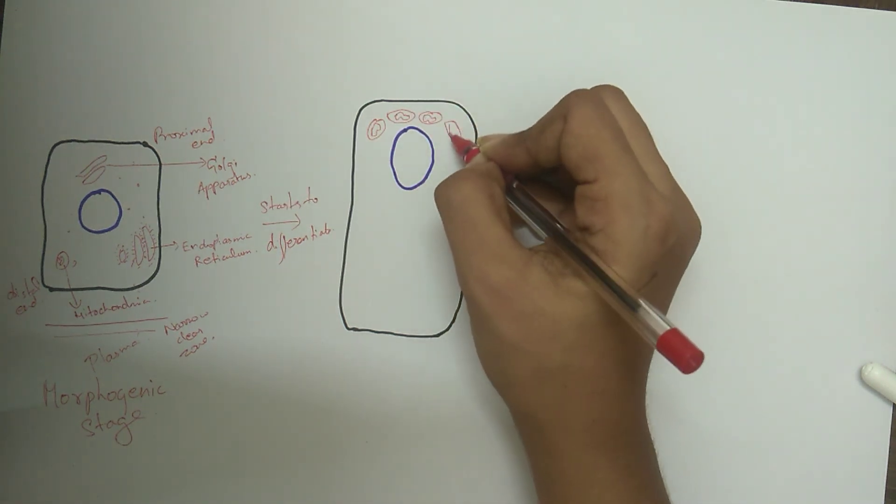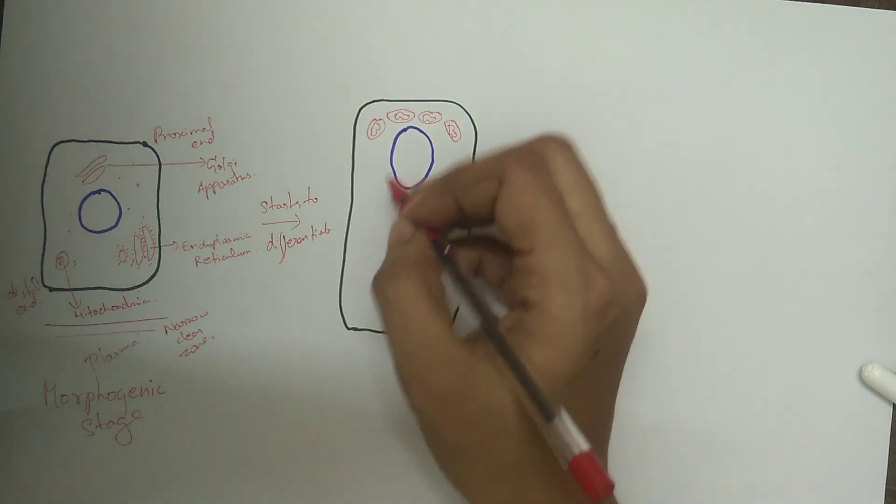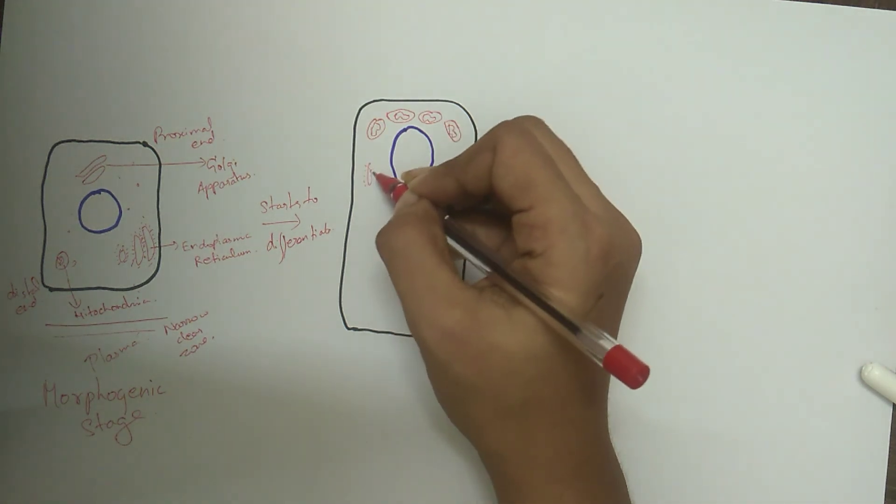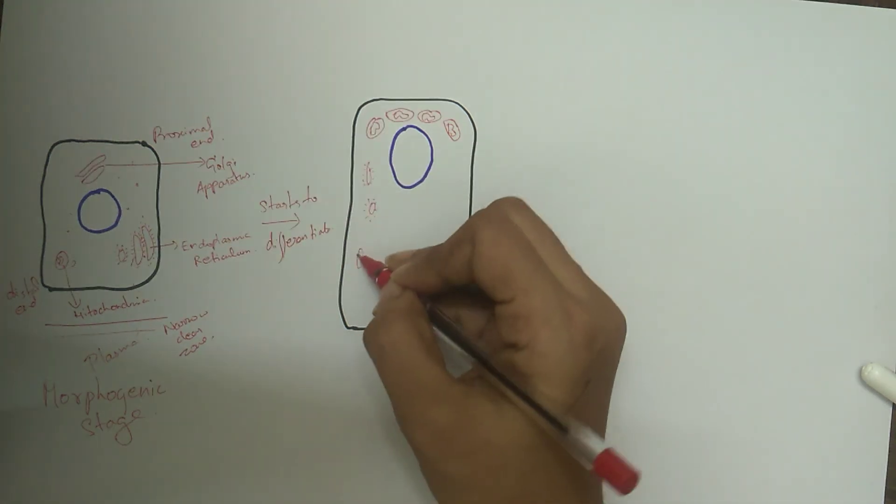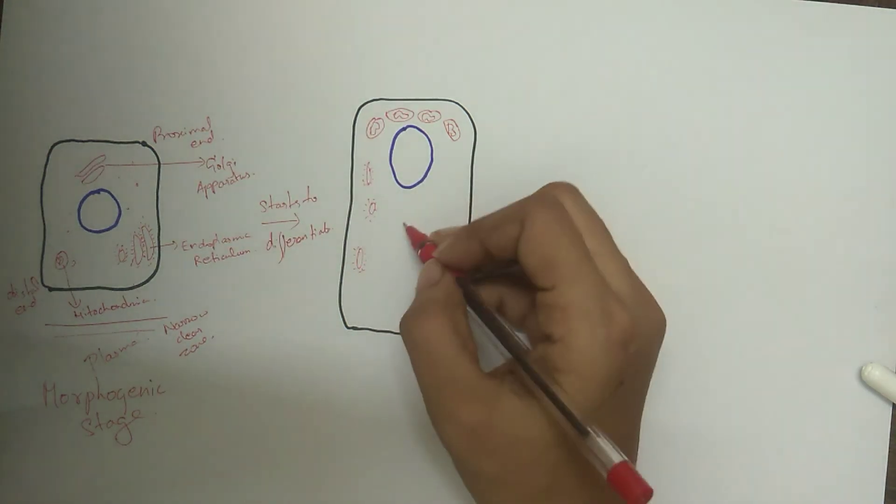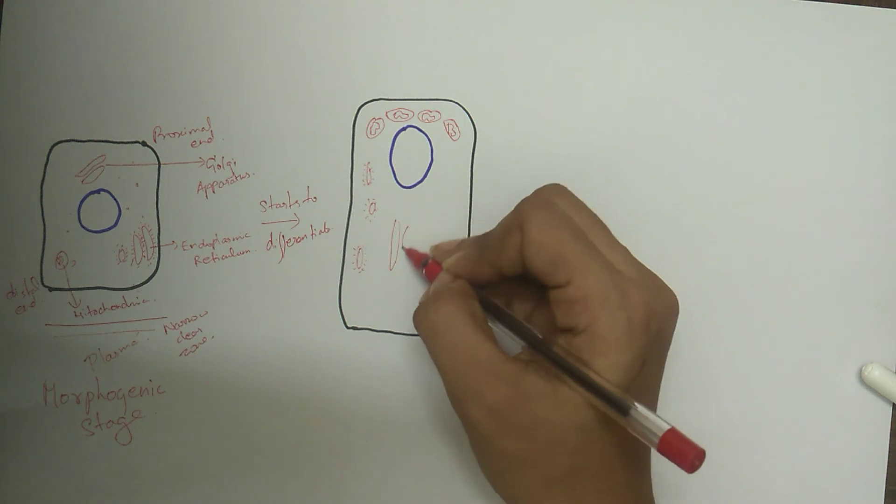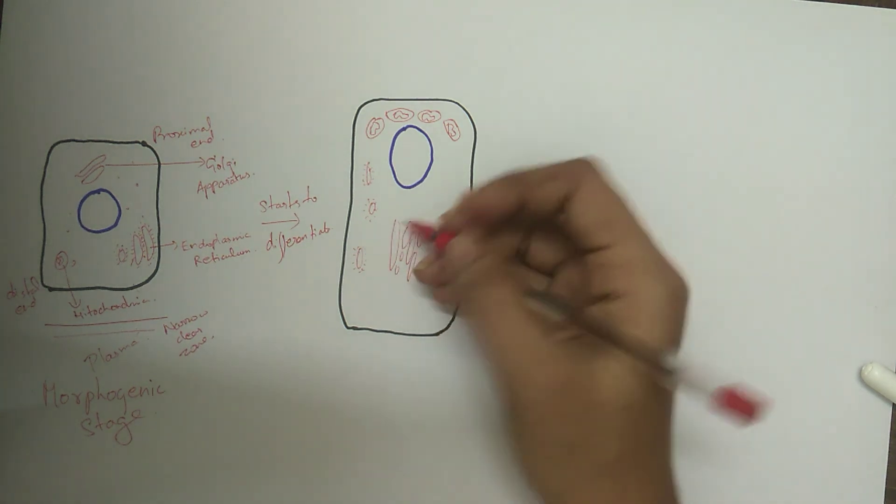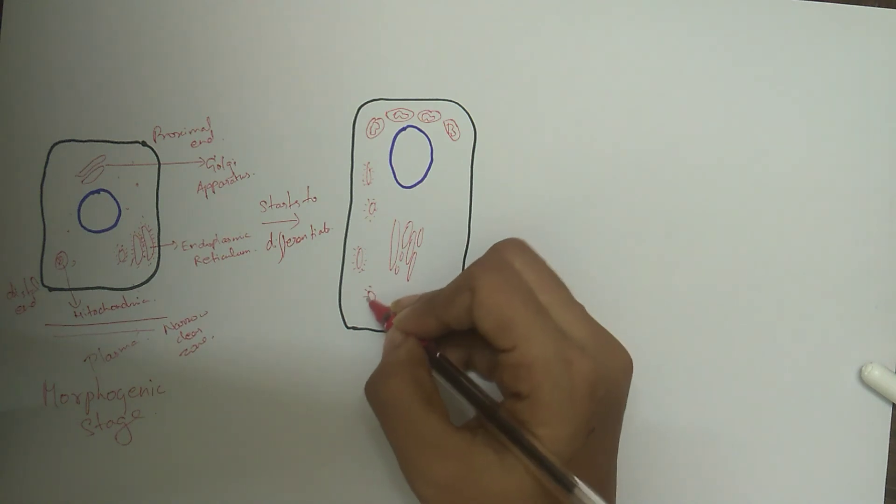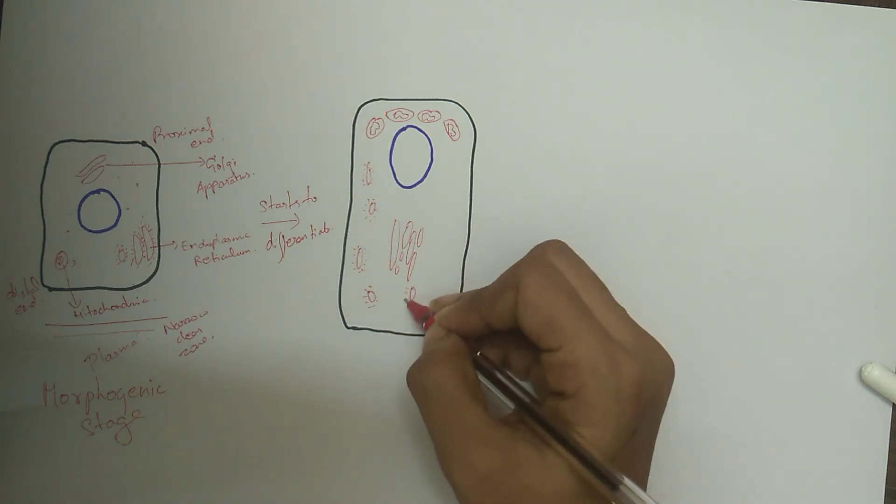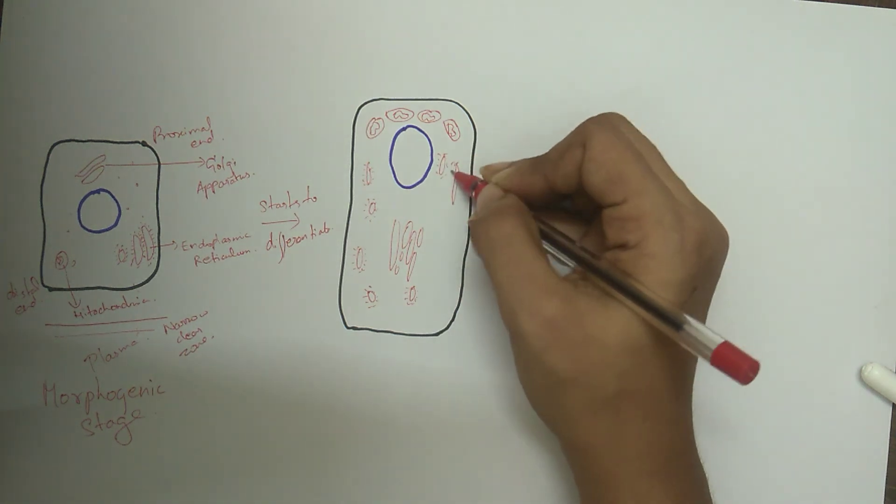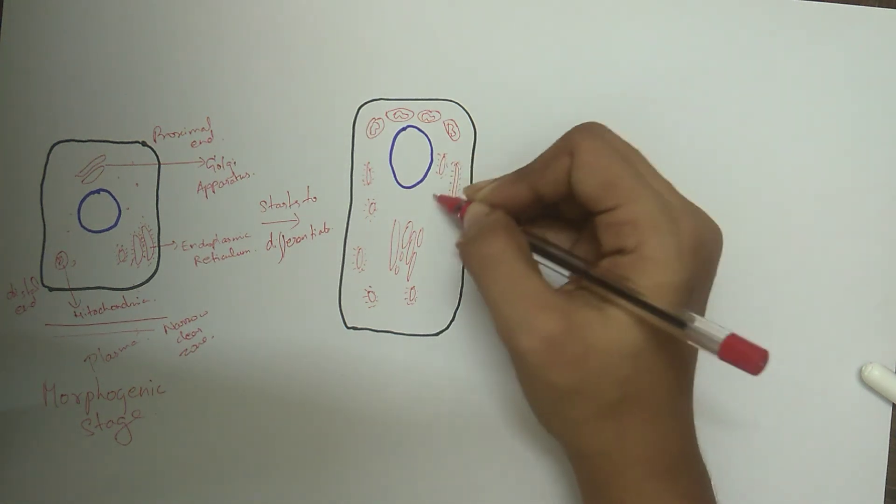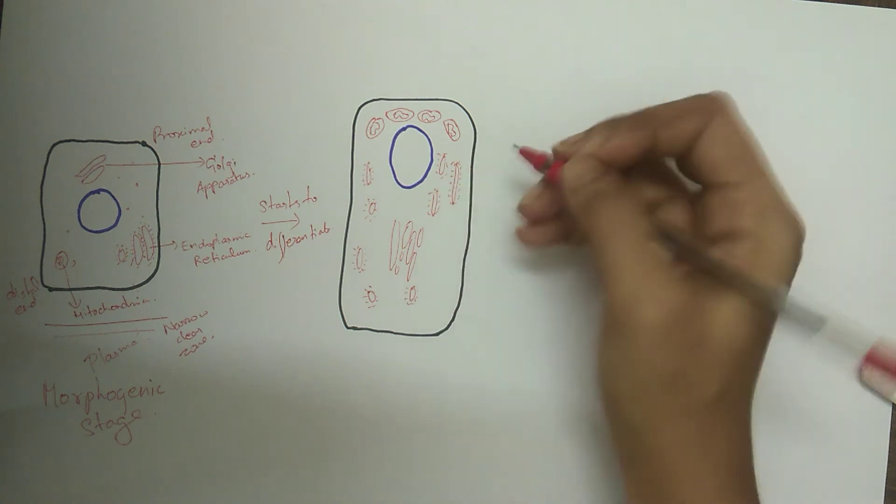This means the elongation of the cell is towards downwards and the nucleus moves upwards to the cell and the Golgi apparatus and the centrioles move downwards. This is known as reversal of polarity. Most of the mitochondria cluster in the proximal part of the cell. The inner enamel epithelial cell becomes a polarized cell and it can no longer divide.